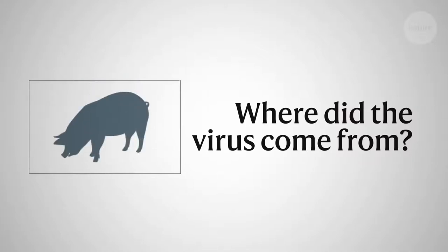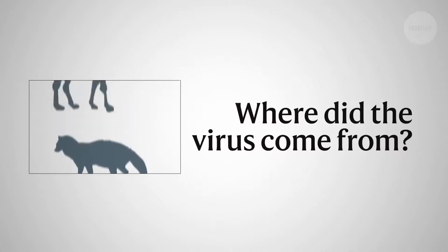Researchers think that the virus originated in an unknown animal at a market in Wuhan. Identifying that animal could help control the current outbreak and gauge its threat going forward.